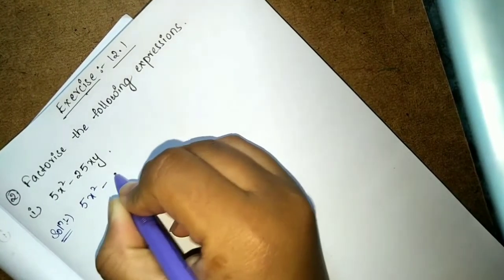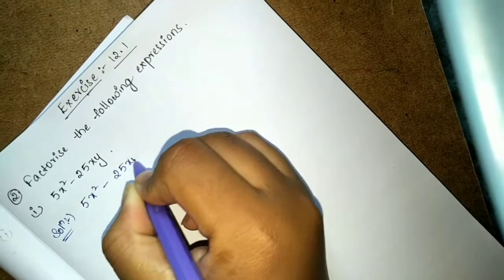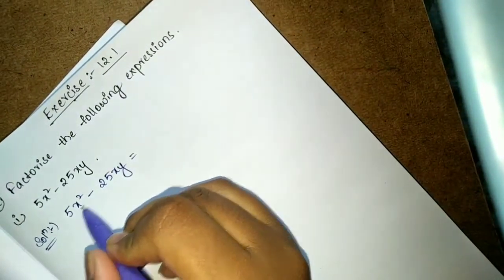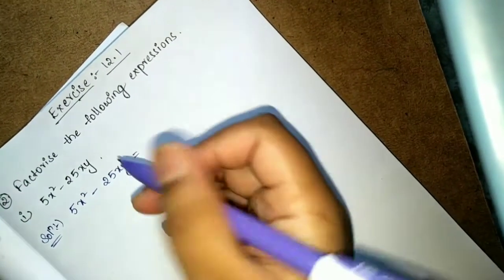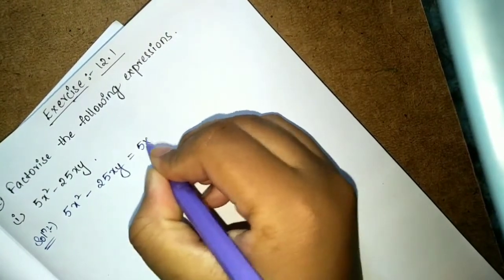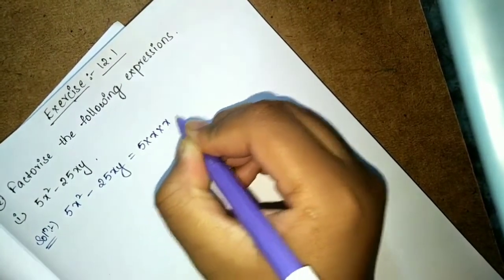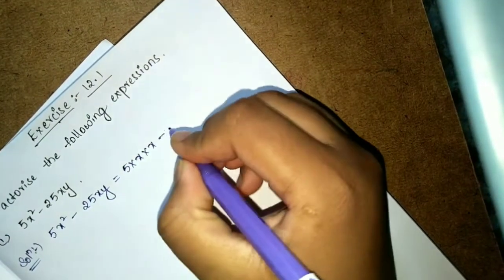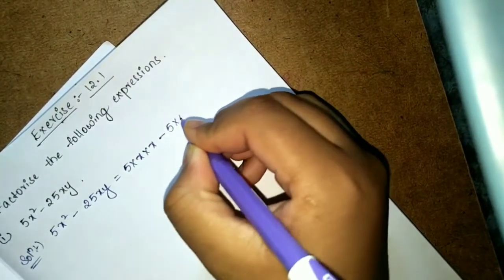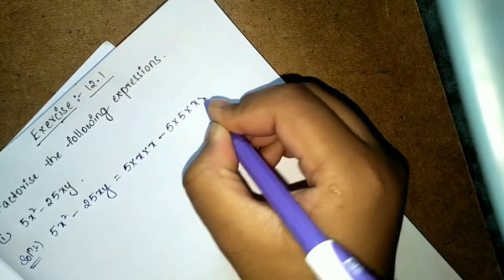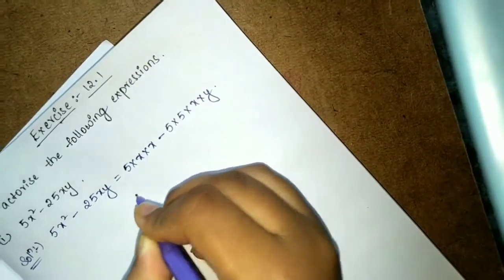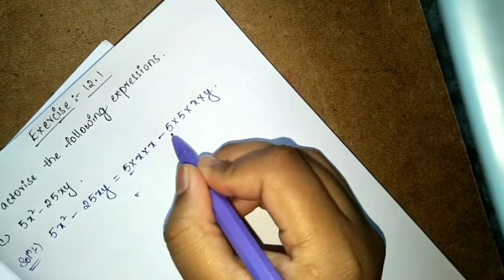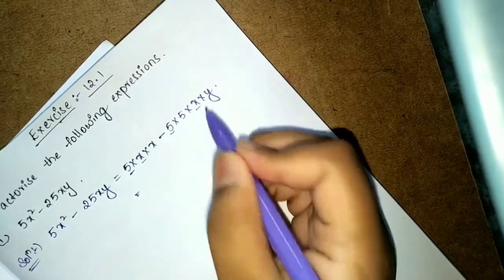Solution: 5x² − 25xy. The factors of 5x² are: 5 × x × x. The factors of 25xy are: 5 × 5 × x × y. So what are the common terms in these two? 5 and x.